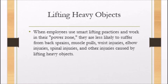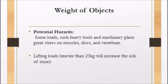When employees use smart lifting practices and work in their power zone, they are less likely to suffer from back sprains, muscle pulls, wrist injuries, elbow injuries, spinal injuries, and other injuries caused by lifting heavy objects. Now, let us look at potential hazards associated with the weight of objects. Some loads, such as heavy tools and machinery, place great stress on muscles, discs, and vertebrae. Lifting loads heavier than 25 kg will increase the risk of injury.